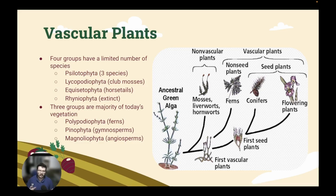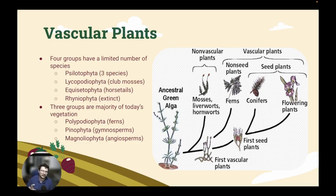Those three major groups are the Polypodiophyta, the Pinophyta, and the Magnoliophyta. For the first four groups I mentioned, I do not expect you to know the names or be able to pronounce them — we do have the club mosses and the horsetails there, and the other two are pretty rare. For the three major groups — the ferns, the gymnosperms, and the angiosperms — I do expect you to at least know those names, as we will talk about them a lot this semester.